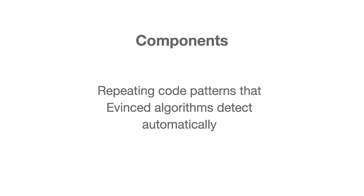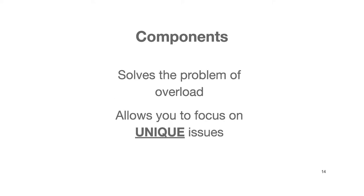Now that we've covered the concept of sessions in depth, let's talk about another important concept, which is what we call components. Essentially, components are repeating code patterns that Evinced algorithms automatically detect. The problem that having components solves is the issue of overload. Typically, if you run an accessibility scan on a page, it will throw out a large number of errors, and usually reports are very noisy. However, often you don't really care about the number of issues — from the perspective of fixing them, you care about the number of unique issues.